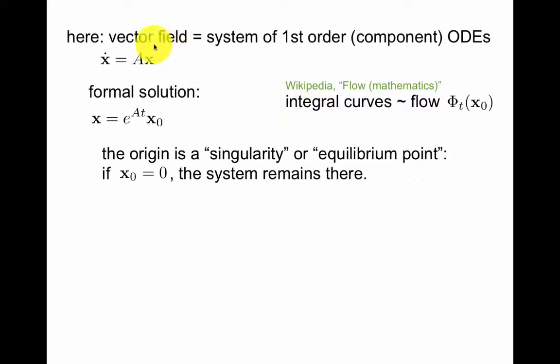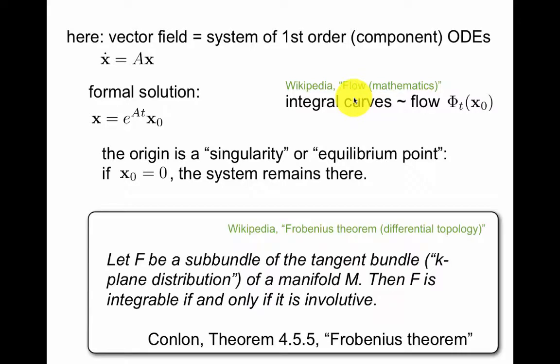The integral curves of this ODE gives a flow φt of x0. So if you specify initial condition, you have some flow. And this word in mathematics is borrowed from fluid dynamics, which we'll return to in a little bit. Now you can prove theorems about this. One key theorem is Frobenius' theorem.